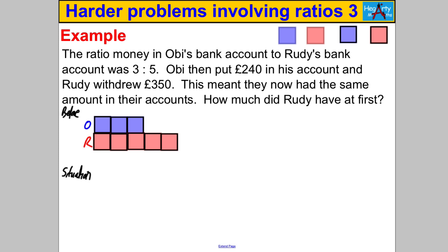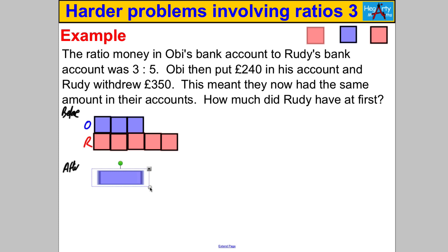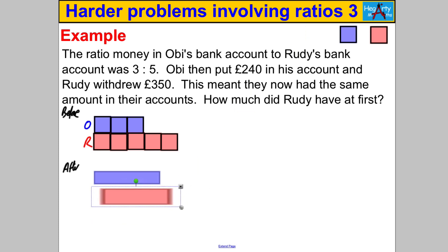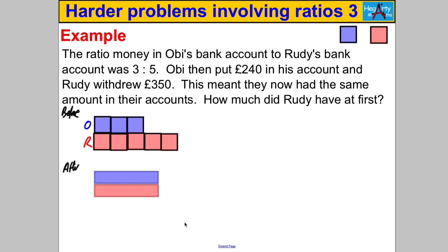When Obie puts money into his account, I don't know how many parts that's worth; when Rudy takes out money, I don't know either. But I can draw a picture to represent it. In the after situation, Obie's has gone up by 240, and Rudy's has gone down by 350 — but they're going to be the same worth. You can't quite tell where the boxes lie; you just have to represent it roughly.